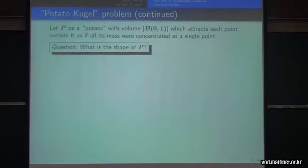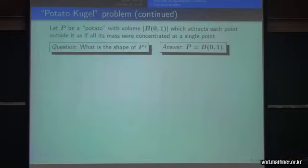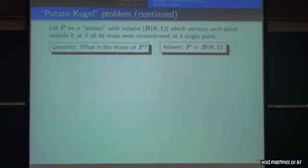In other words, if an unknown potato behaves like a one-point mass, can you show that the potato is spherical? This is our question. And actually the answer is yes—only the ball-shaped potato produces a symmetric force and behaves like a one-point mass. Other shapes of potato cannot produce the symmetric gravitational force. We will prove this in one slide—it's very easy.